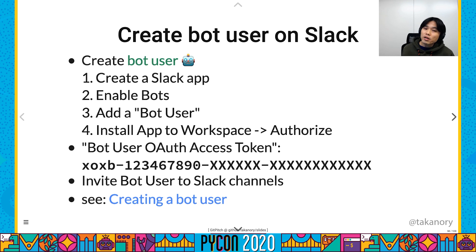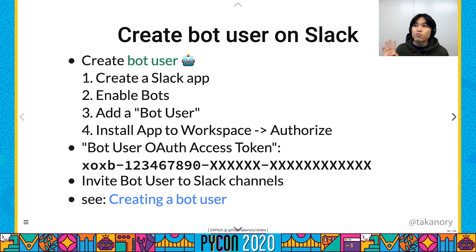I will describe how to create an interactive bot. First, we create a bot user on Slack. Step 1 — create a Slack application. Step 2 — enable bots. Step 3 — add a bot user. Step 4 — install the application to your workspace and authorize. As a result, we get a bot user auth access token (starting with xoxb). Then, invite the bot user to several Slack channels.